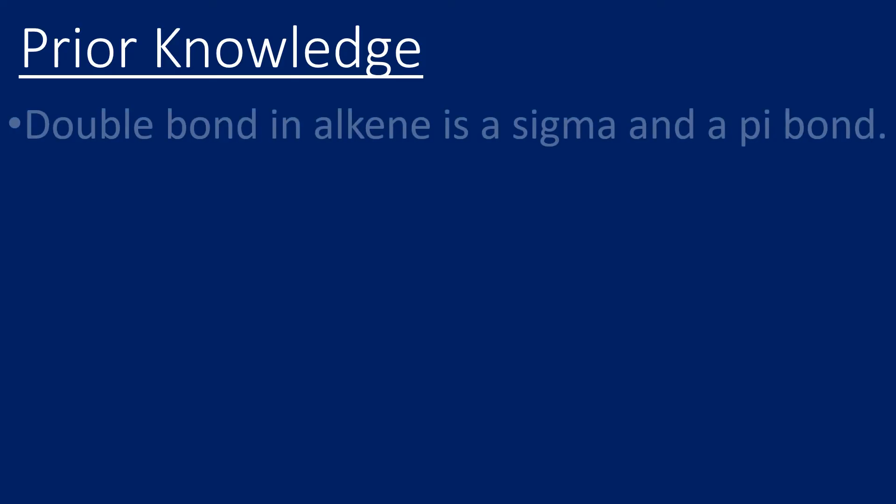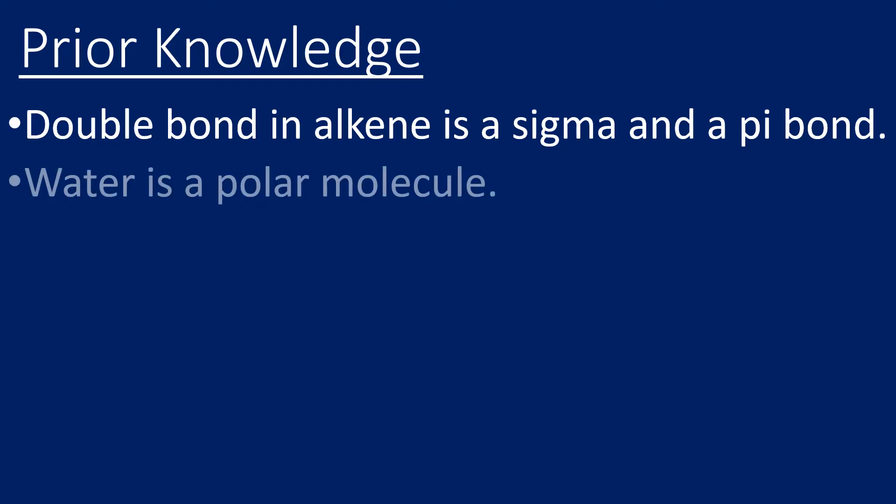Just a couple of points of prior knowledge. We need to be aware that the bonding in an alkene is a double bond—it's a sigma and a pi bond. Water is in fact a polar molecule. If we draw a water molecule, it's got two lone pairs on the oxygen, and it's delta plus on each of the hydrogens and delta minus on the oxygen.